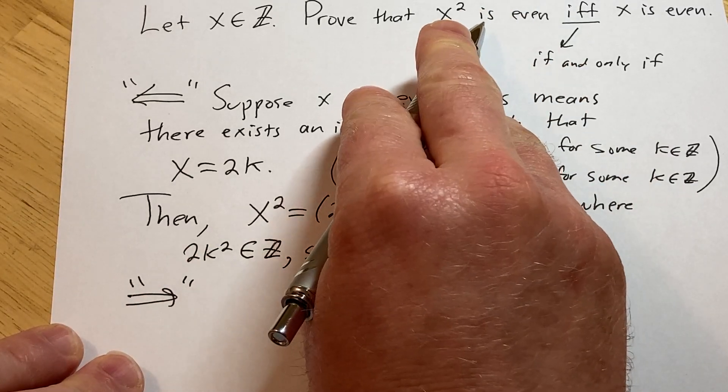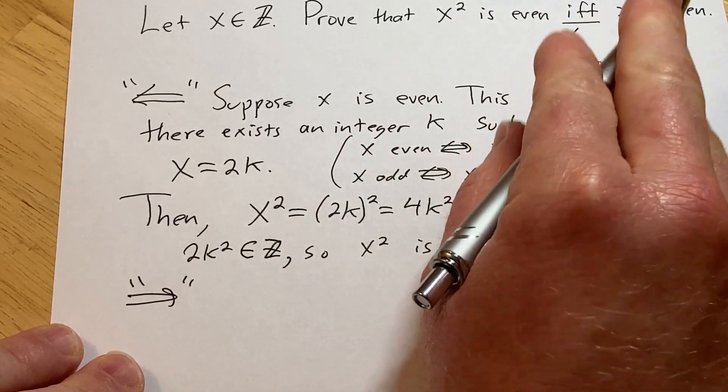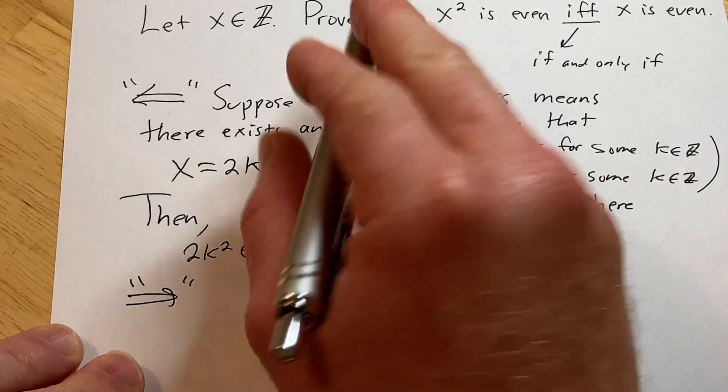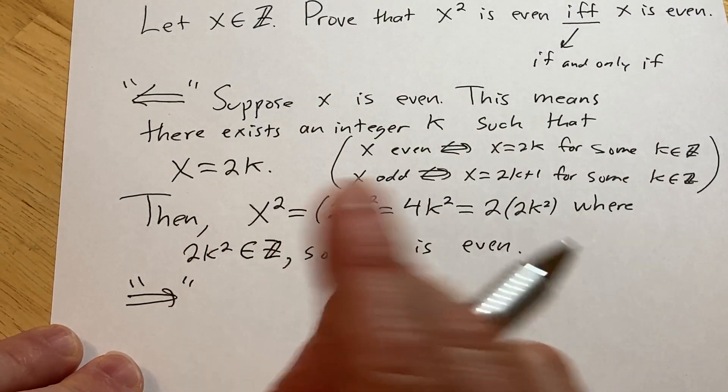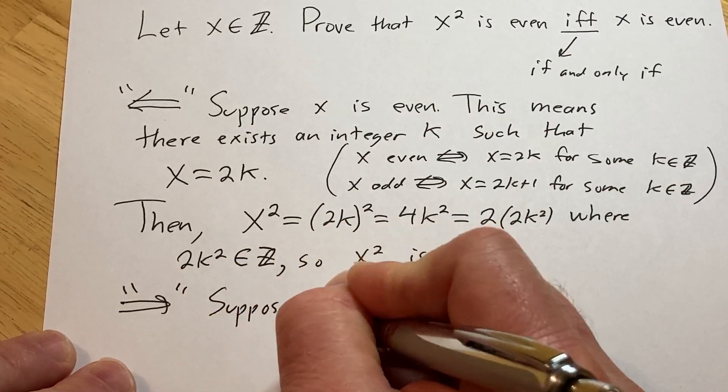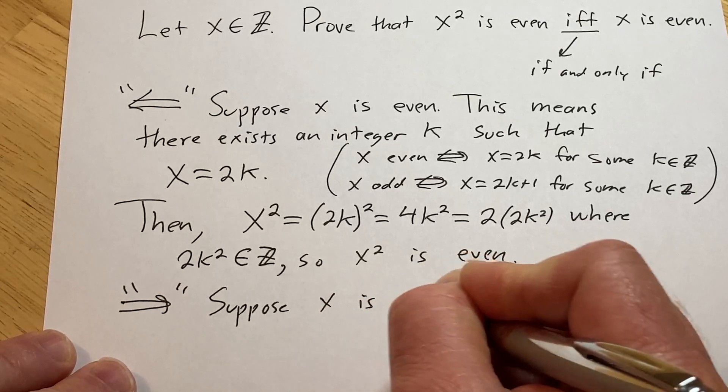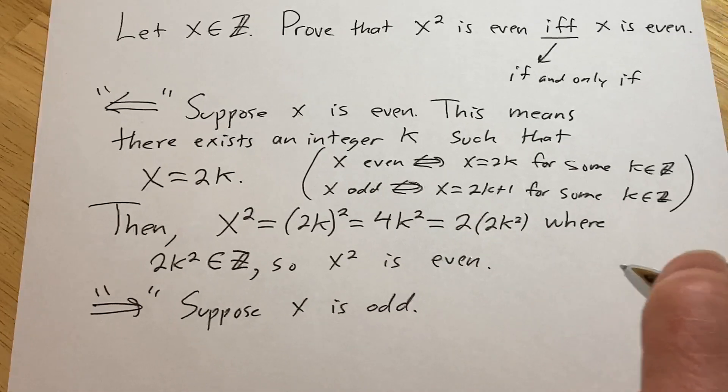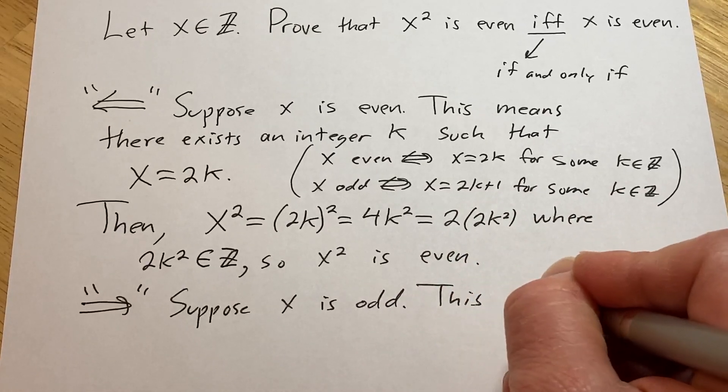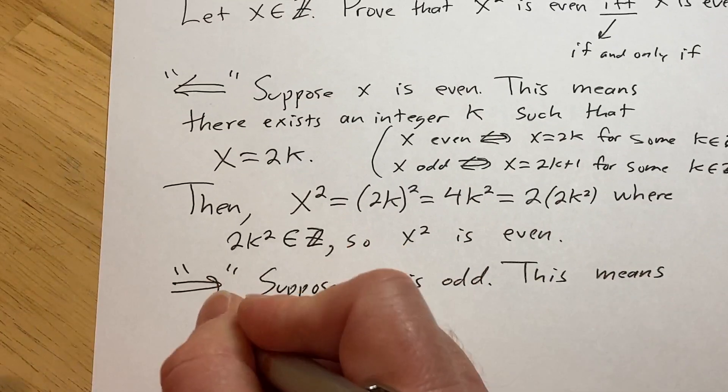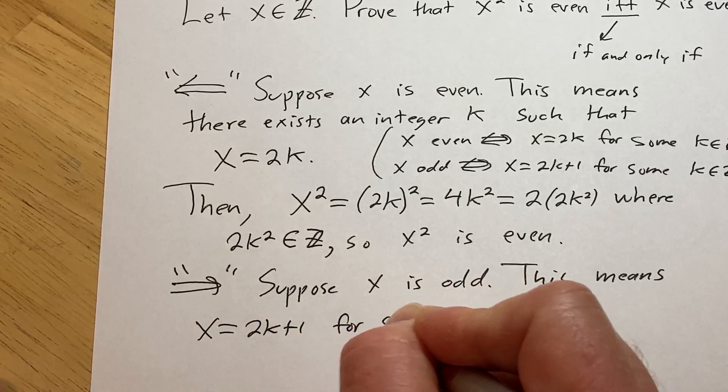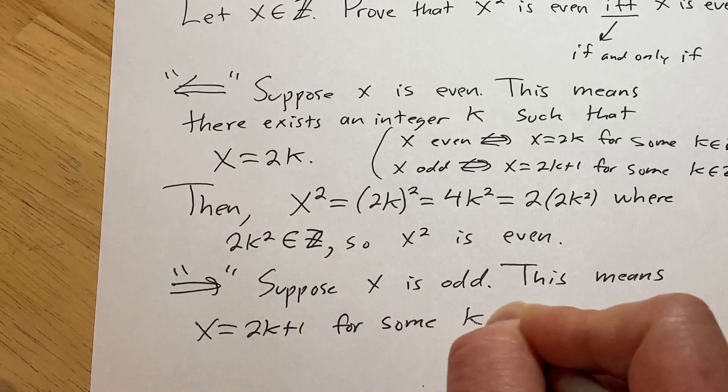We're showing that if x squared is even, then x is even, but we're going to prove what's called the contrapositive. So if x is odd, then x squared is odd. That's equivalent to showing this direction. So I'll start by assuming, suppose x is odd, and then you simply write down what it means for x to be odd. So this means x is equal to 2k plus 1 for some integer k.